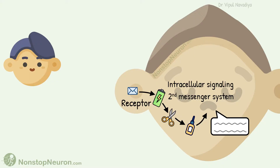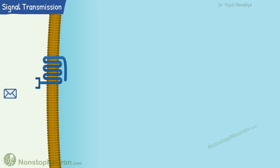If it is a second messenger system, what is the first messenger? I am glad you asked. The first messenger is the extracellular signal molecule that brought the message from the other cell. So now, as you know what the second messenger system is, let's learn something more about it.